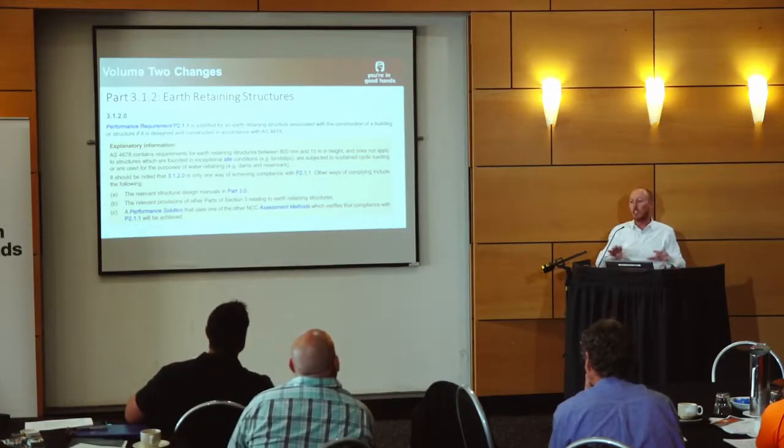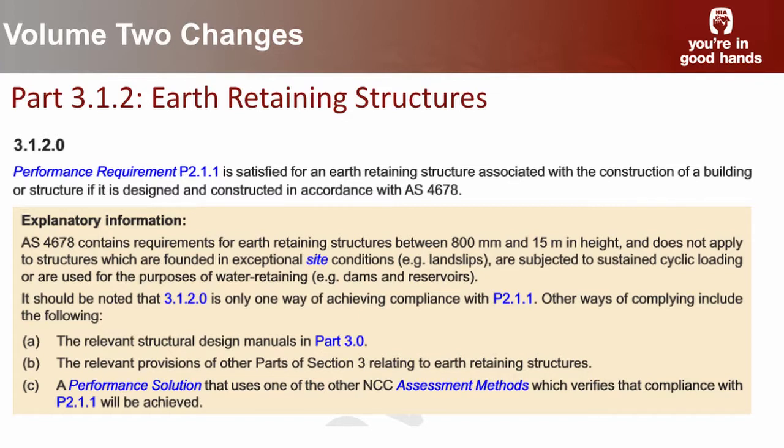I think in the ACT, over one metre you have to have the retaining wall designed by an engineer — generally it's around the one metre mark, though in New South Wales it might be down to 600mm. Essentially, it applies to retaining walls that require building approval. By incorporating these standards into the code, it doesn't change that requirement — the engineer still needs to be involved, but this gives them an additional design standard option they can use.